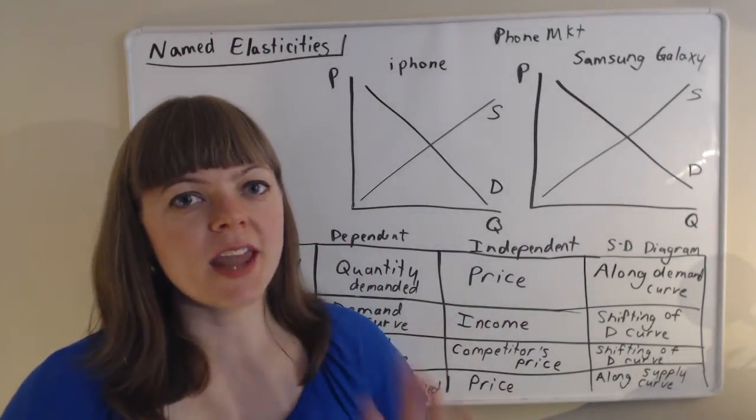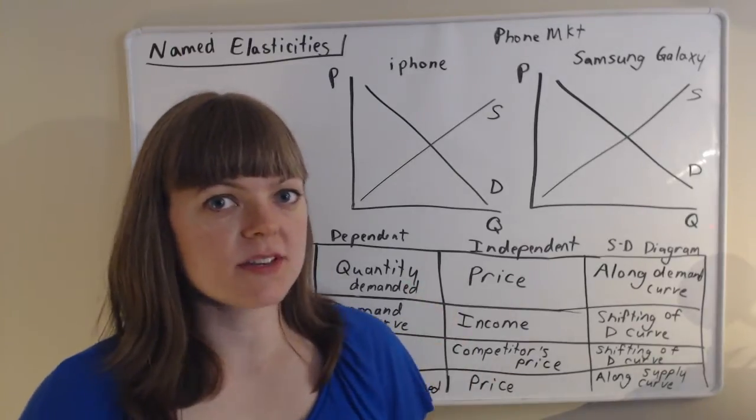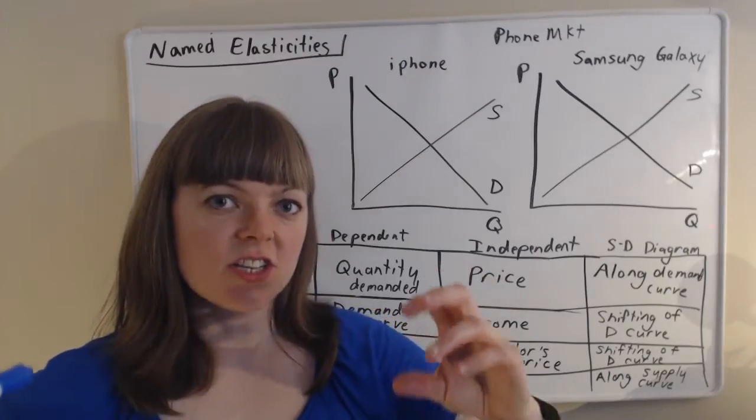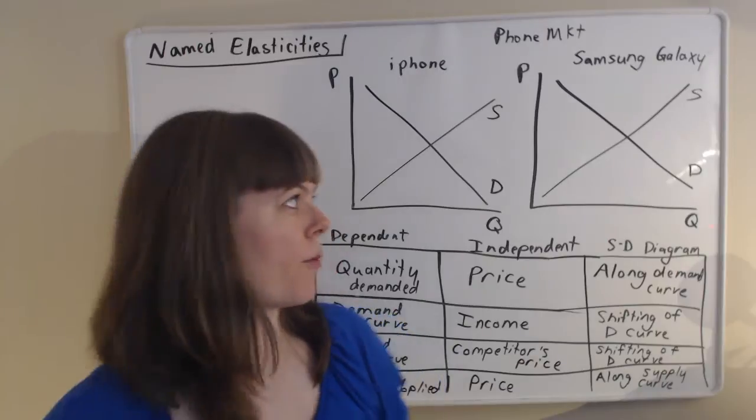So I'm going over the four named elasticities. We know that an elasticity is just a measurement of a behavioral response. And it's just going to be the percent change in the dependent variable divided by the percent change in the independent variable.